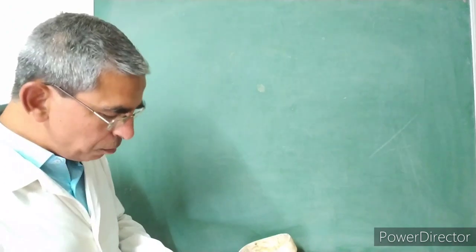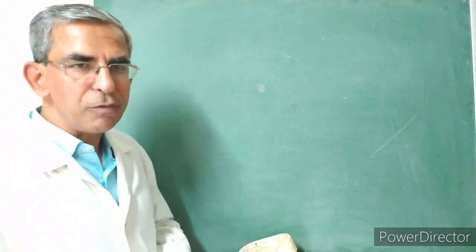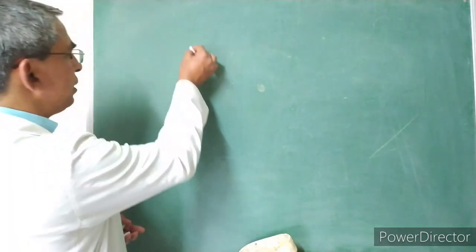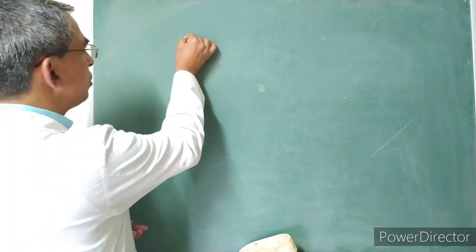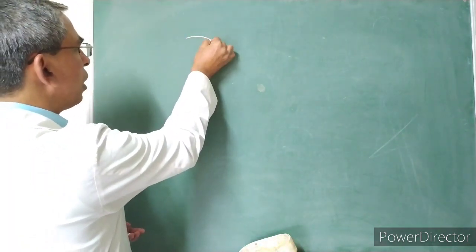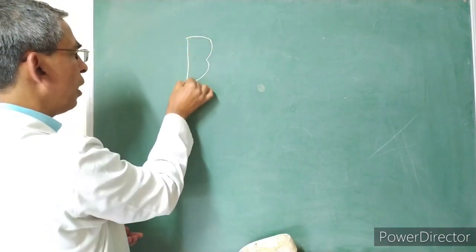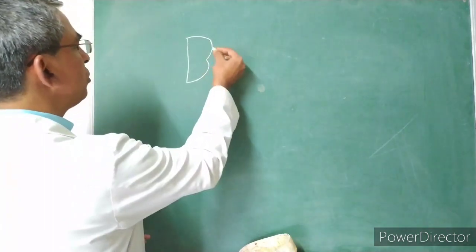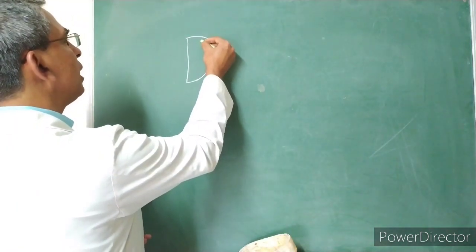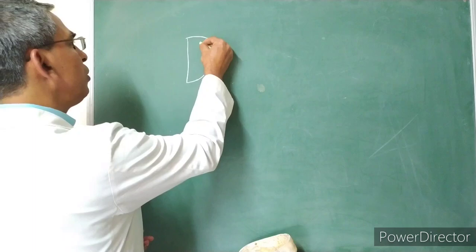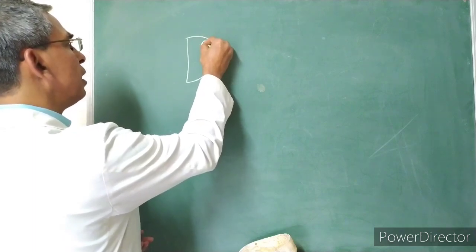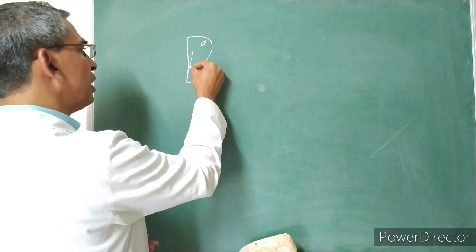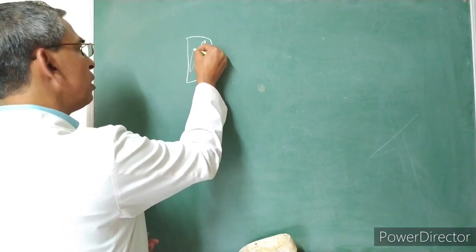The chorda tympani is a branch of the facial nerve. The facial nerve arises from the pons-medulla junction. In the pons and medulla, there is the superior salivatory nucleus and the nucleus of the tractus solitarius, which extends into the medulla.